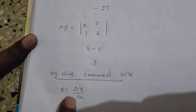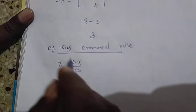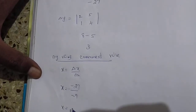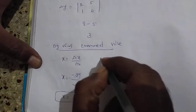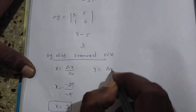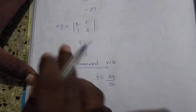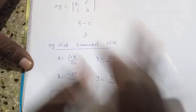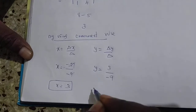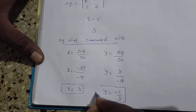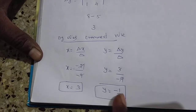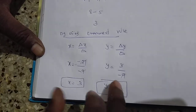Cramer's rule formula is X equals delta X divided by delta. Therefore, X equals minus 27 divided by minus 9, which gives X equal to 3. Like that, you find Y: Y equals delta Y divided by delta, which is 3 divided by minus 9, so Y equals minus 1 by 3. So now you can find the values of X and Y by the method of Cramer's rule.